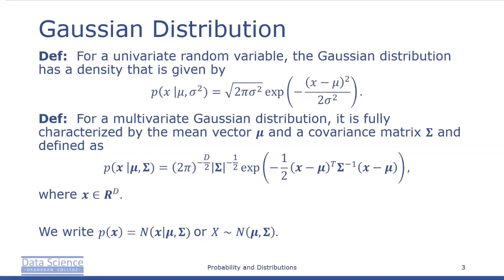We write the probability of x as normally distributed with mean mu and sigma squared, or the random variable x is approximately normal with mean mu and variance sigma squared. The special case of the Gaussian distribution with mean 0 and identity covariance — that is, mu equals 0 and sigma equals the identity matrix — is referred to as the standard normal distribution.